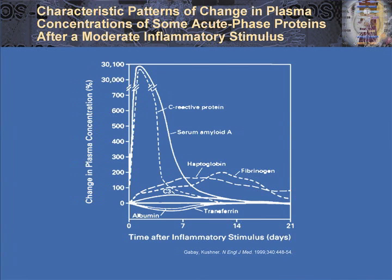This is a classical paper by my friend Irving Kushner, and this shows the acute phase reaction after acute inflammation. Here we have CRP climbing dramatically. Remember, the acute phase reaction is a generation of the innate immune response. We use this clinically, but these molecules are all involved in host defense.